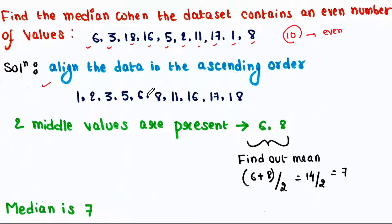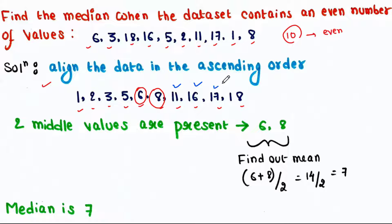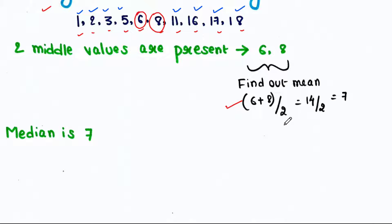In ascending order: 1, 2, 3, 5, 6, 8, 11, 16, 17, and 18. Two middle values are present in the above data set: 6 and 8. There are 4 values above them — 11, 16, 17, and 18 — and 4 values below them — 1, 2, 3, and 5. Now find the mean of these two numbers: 6 plus 8 divided by 2 equals 14 divided by 2, which equals 7. Therefore, the median is 7 for the above data set.